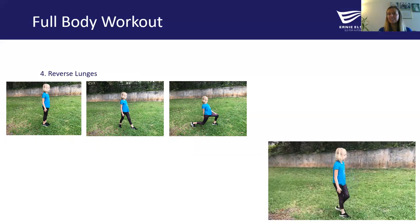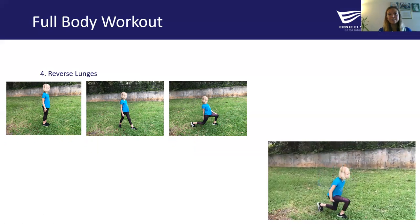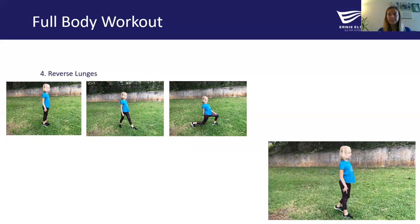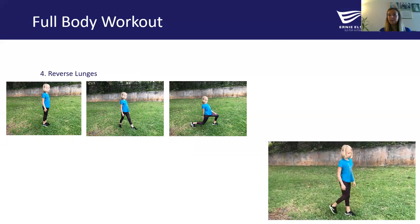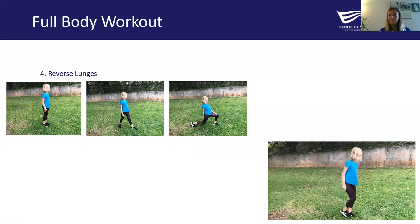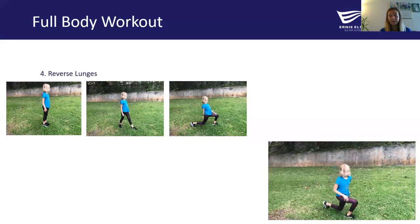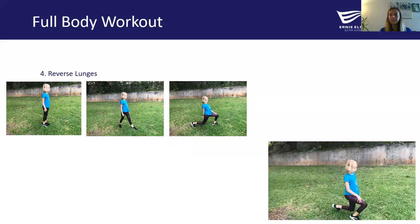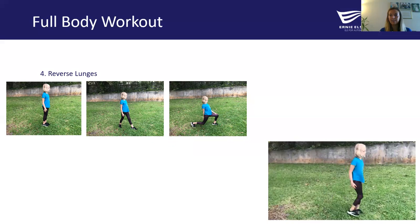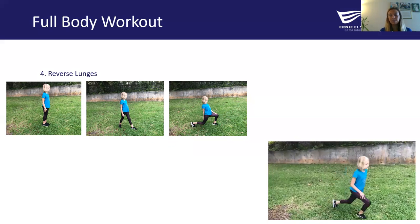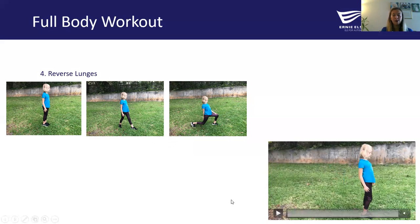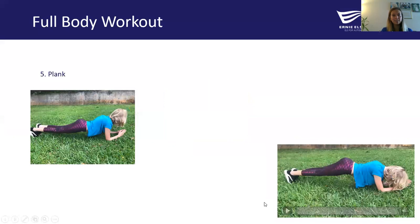Our fourth exercise is our reverse lunges — a lower body exercise. You start with your feet together, take a step back, and lower your body close to the ground. You want to make sure that back leg is just an inch or two above the ground, not actually touching it. Then stand back up bringing your leg back to the center. Alternate which leg steps back. Both knees should be at about 90 degrees when they're down. Go ahead and pause the video, do your reverse lunges for 30 seconds, and we'll see you when you're back.